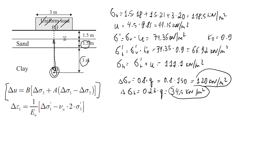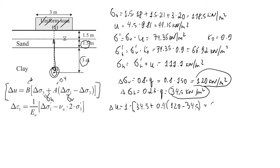To find the change in pore pressure we use Skempton's formula: Δu = B[Δσ₃ + A(Δσ₁ − Δσ₃)], where B = 1 (saturated soil), A = 0.4, Δσ₃ (horizontal) = 34.5, and Δσ₁ (vertical) = 120. Substituting: Δu = 1 × [34.5 + 0.4 × (120 − 34.5)] = approximately 68.7 kN/m².